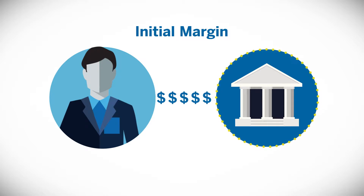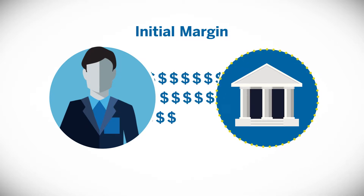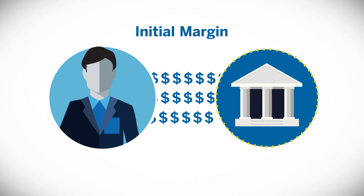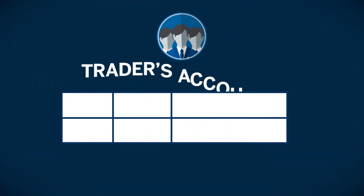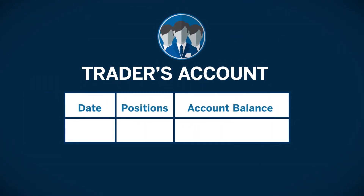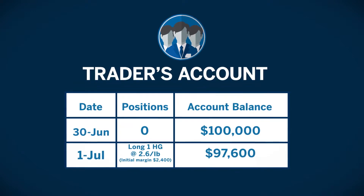While CME clearing sets the margin amount, your broker may be required to collect additional funds for deposit. Let's assume the trader pays $2,400 initial margin per lot to open the long HG COMEX copper futures November contract on July 1st at $2.60 per pound.